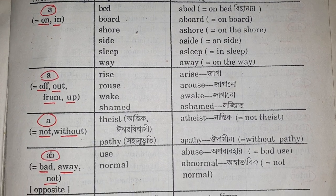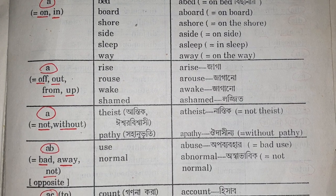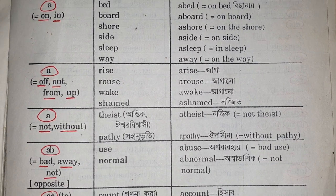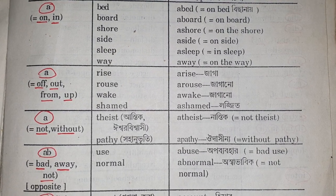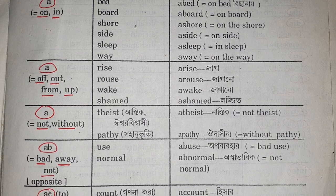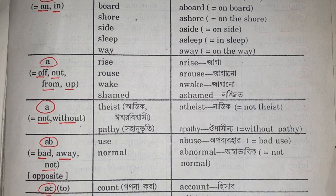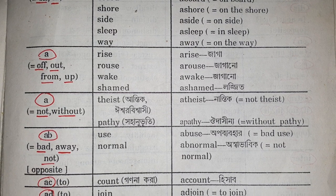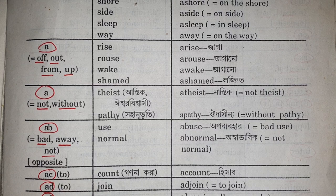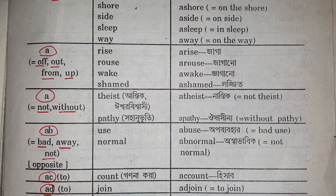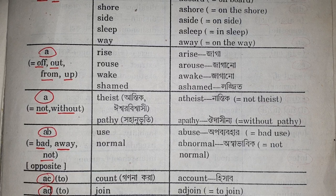There is another A with the meaning of off, out, from, or up. Base word: rise — arise; rose — arose; arouse; wake — awake; shamed — ashamed. There is another A with the meaning of not or without. Base word: theist — atheist; pathy — apathy.